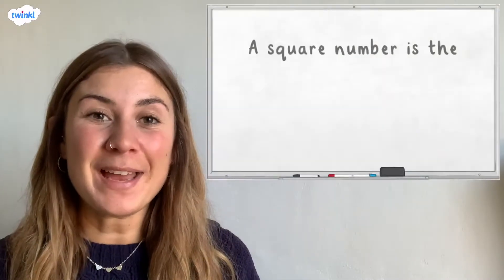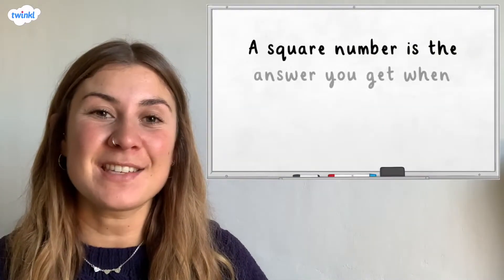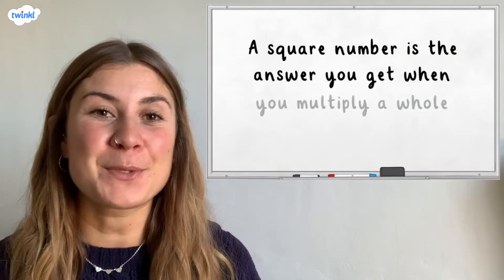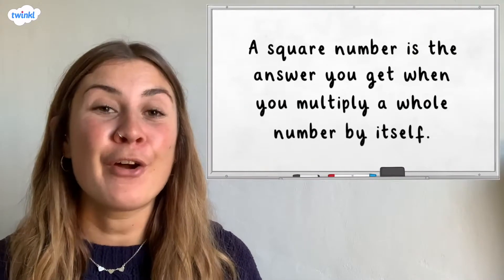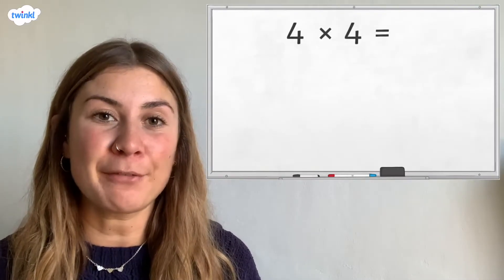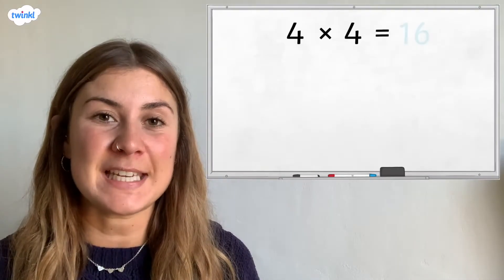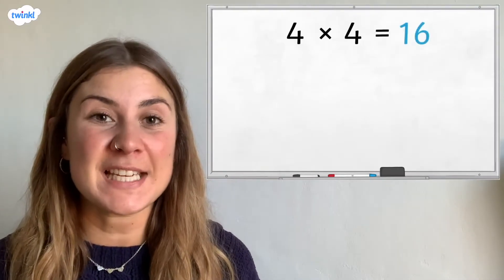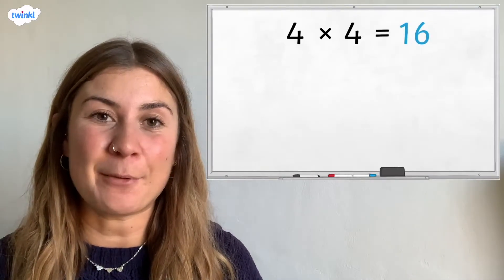A square number is the answer you get when you multiply a whole number by itself. For example, 4 multiplied by 4 equals 16, so 16 is a square number.